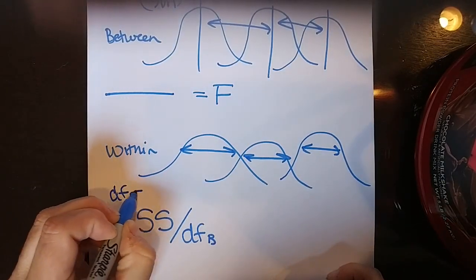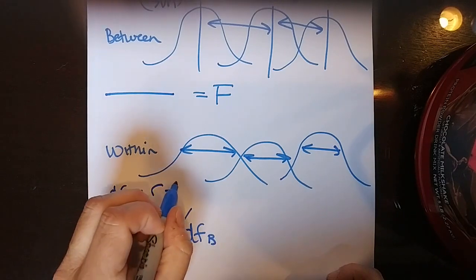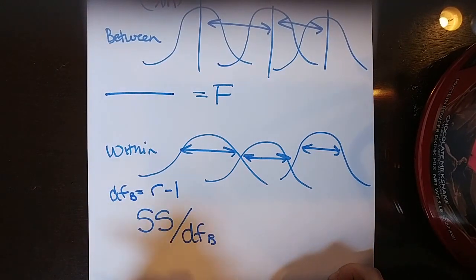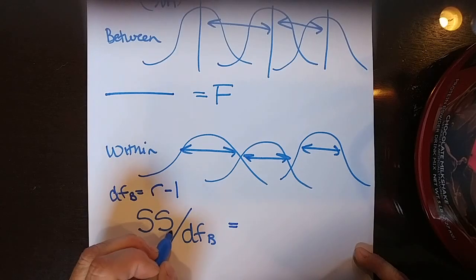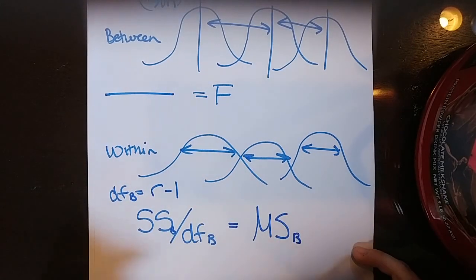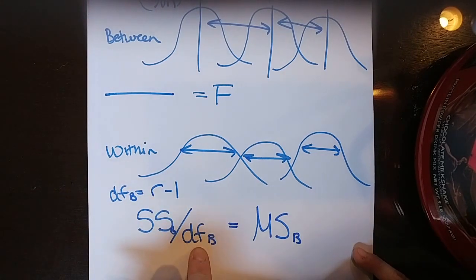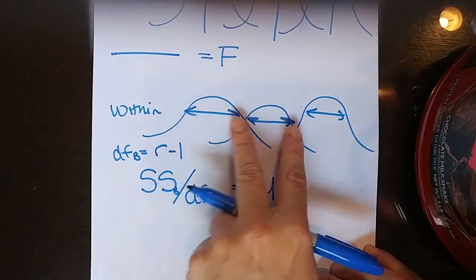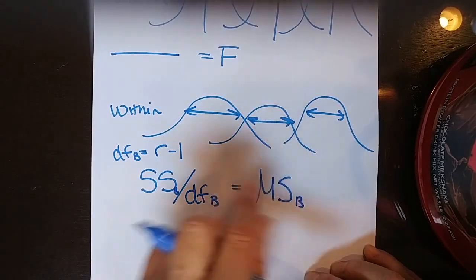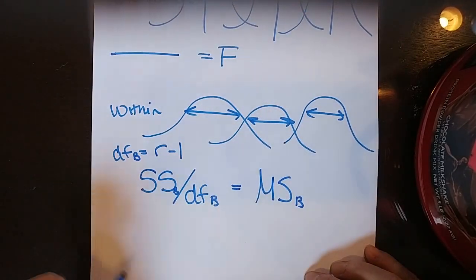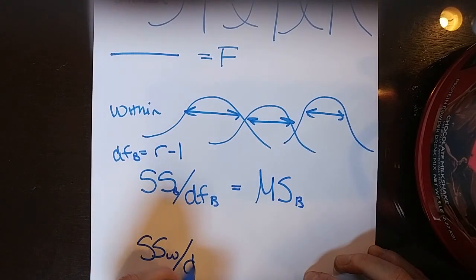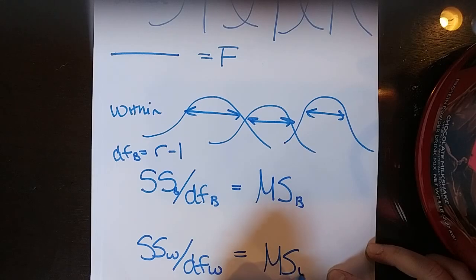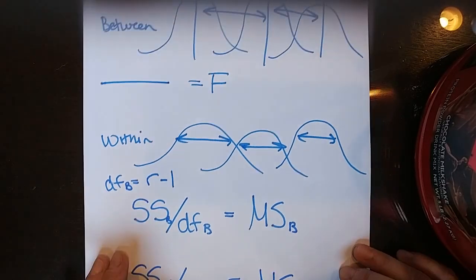The sum of squares between divided by the degrees of freedom between gives us the mean squared between. See how it's a mean — I've summed up all the squares and divided by how many groups I have. Then I can do the same for the within part: sum up all the deviations, square them so they don't sum to zero, sum them up, find an average. Taking the sums of squares within divided by the degrees of freedom within gives the mean squared within.